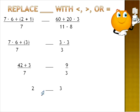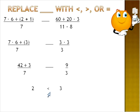Now we can put in the correct symbol — less than, greater than, or equal to — and in this case it will read two is less than three. You solve the expressions on the left and on the right separately, or at the same time one step each, and when you get to the end you'll be able to compare the values.